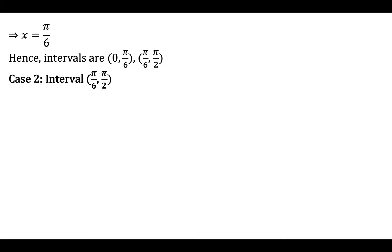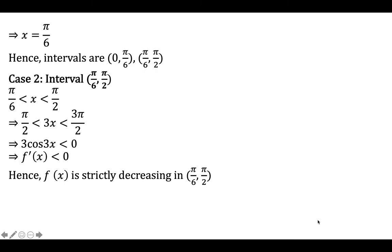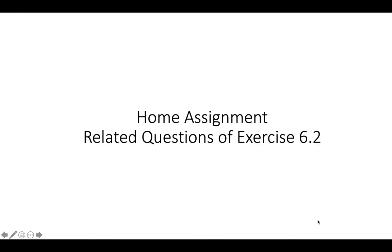When x belongs to pi by 6 to pi by 2, then pi by 2 less than 3x less than 3 pi by 2, so 3 cos 3x less than 0, meaning f of x is strictly decreasing in the interval pi by 6 to pi by 2. This is the way we find intervals for strictly increasing and strictly decreasing functions. Your home assignment is to complete exercise 6.2. Thank you.